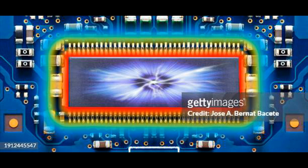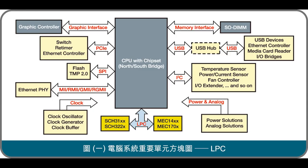Power Management. Chipsets may incorporate power management features to optimize energy consumption and extend battery life in mobile devices and laptops. These features control power states for different components, dynamically adjusting power levels based on usage patterns and user preferences. Security Features. Some chipsets include security features such as hardware-level encryption, secure boot mechanisms, and trusted platform modules (TPMs) to enhance system security and protect against unauthorized access or tampering.